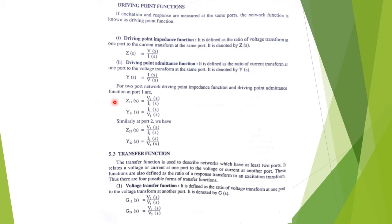For the two-port network, we can define the driving point input impedance function and driving point admittance function. For example, the driving point input admittance function Y11(s) is defined as the ratio of the current transform at the input port to the voltage transform at the input port.